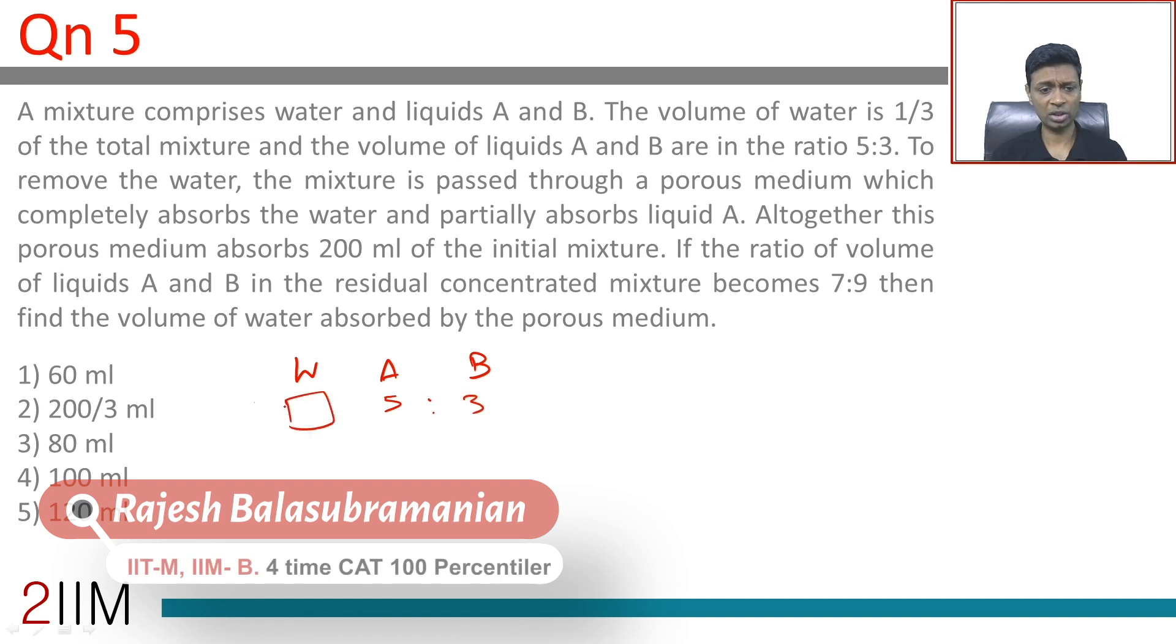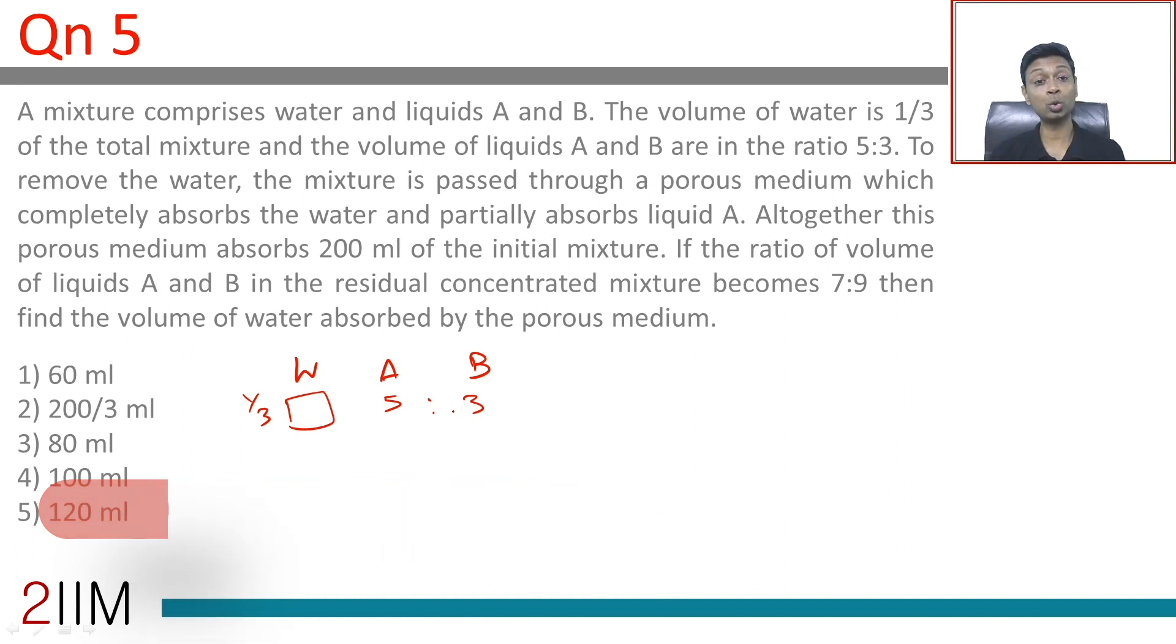This is one-third of the total. Think about this: 5 plus 3 is 8. This 8 should account for two-thirds of the total. If we can get to the overall equation quickly, this question becomes much easier. Five units plus three units is eight units. This eight units accounts for two-thirds of the overall volume because water accounts for one-third.